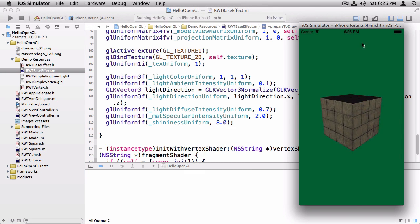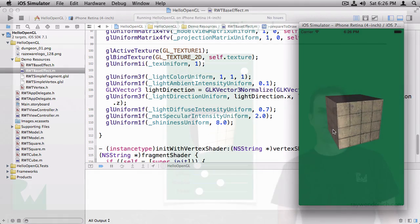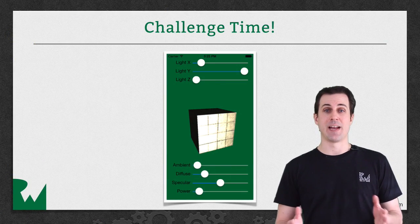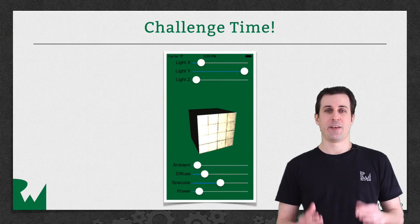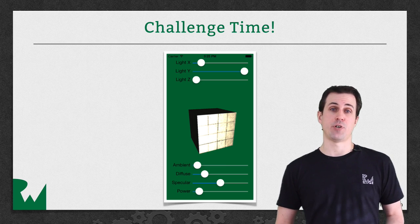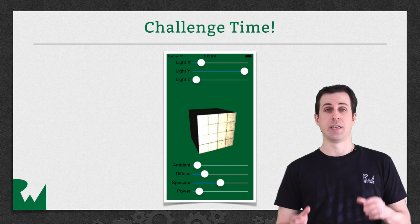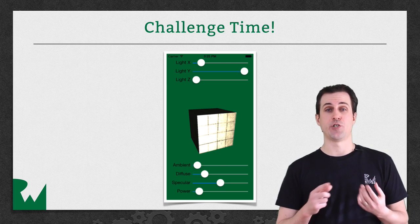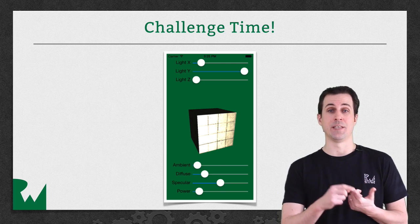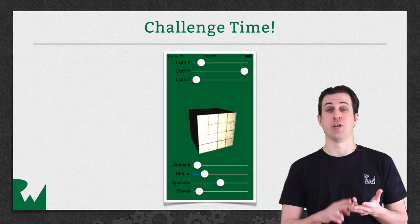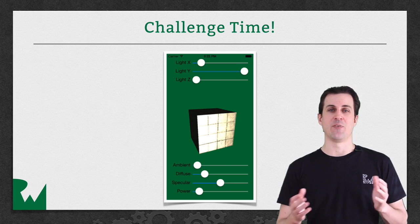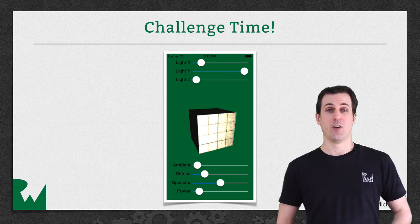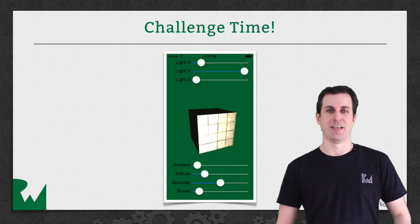There we go. Now we got all components of the Phong model working. We got ambient, we got diffuse, as you can see here, and we got specular. All right, that's it for this video tutorial. And finally, we have a challenge ready for you. I think you'll find this fun and educational. It's actually a fairly simple challenge. All you have to do is load up the project and put a few sliders on there that allow you to change dynamically the position of the light and the various intensities for the ambient, diffuse, and specular colors and the shininess. And that'll give you more of an intuitive understanding of how this lighting model works. I hope you enjoyed this video tutorial. Thanks for watching, and we'll see you next time.